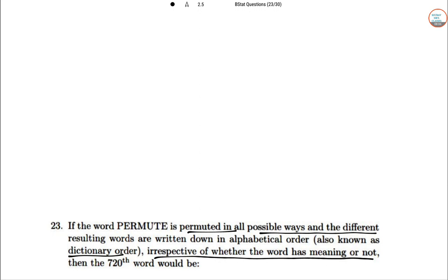Putting the letters of PERMUTE in dictionary order: E, E, M, P, R, T, U. Since the last 6 letters are distinct, 6! = 720 permutations do not change the position of the first letter and include all possible permutations of last 6.